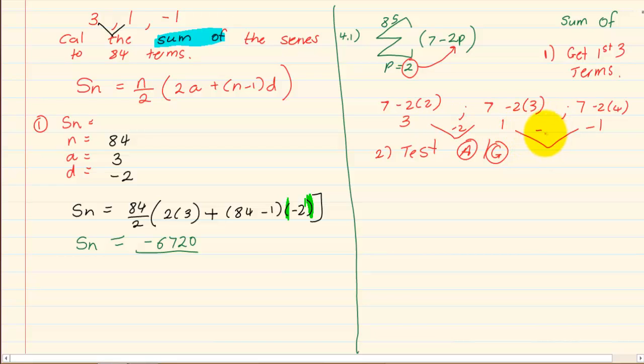After you've decided it's arithmetic you use the correct formula, and then you are back to start by deciding how much information I have, three out of four. Once you have three out of four simply substitute into your formula. Thank you for watching.